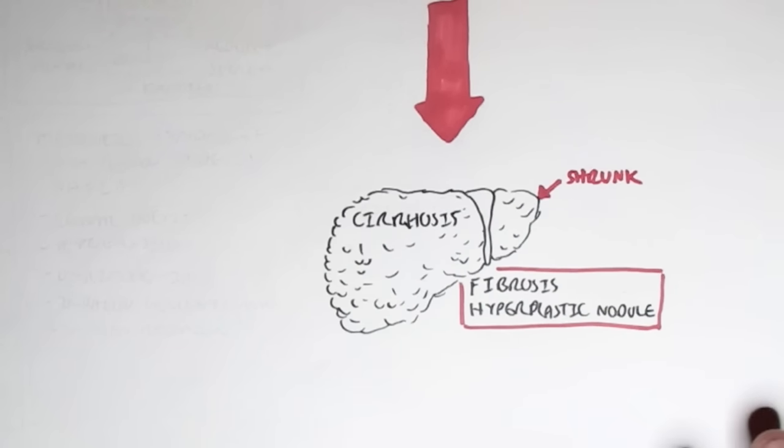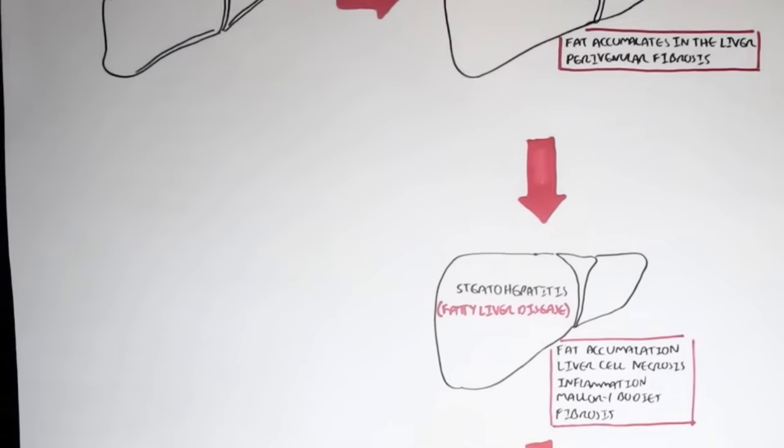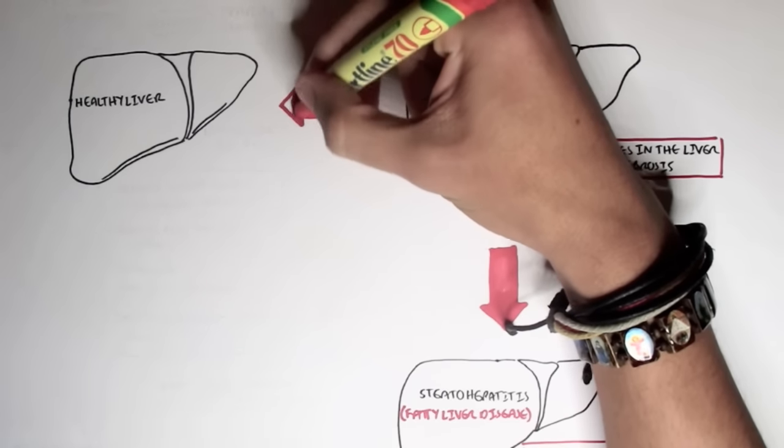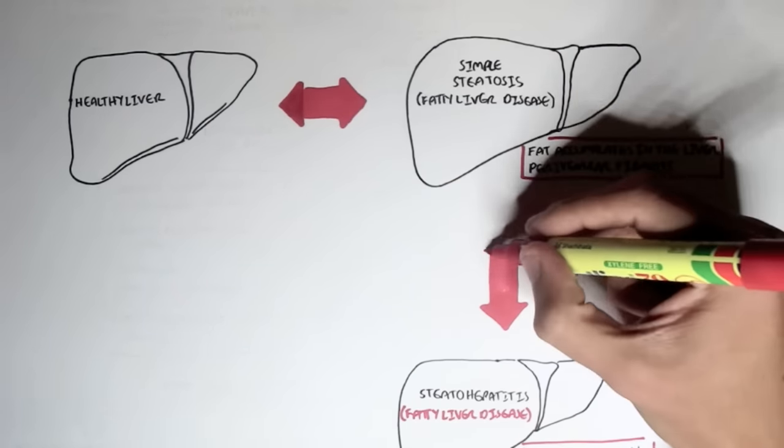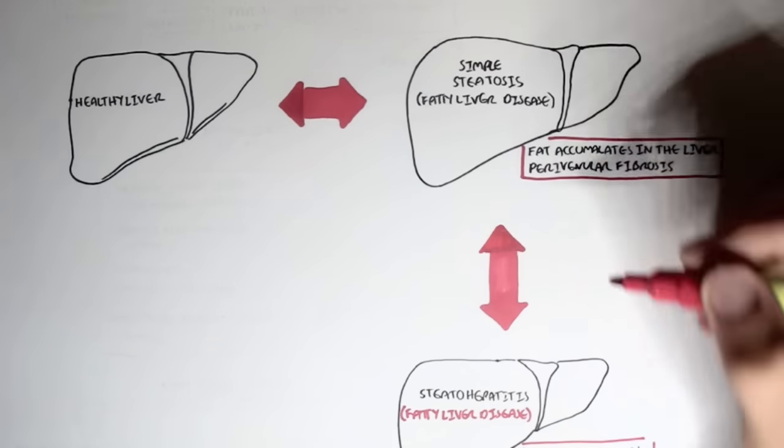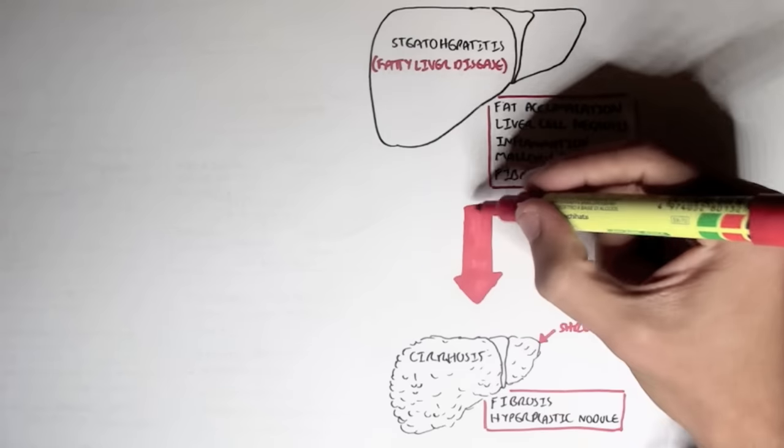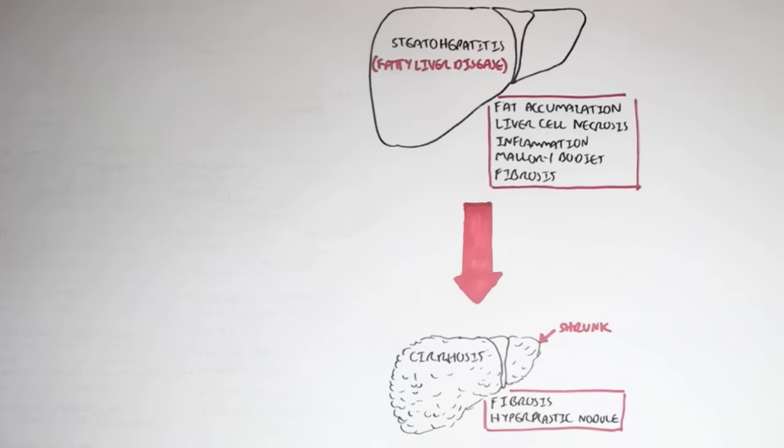It is interesting to note that from a steatosis state, it is reversible to go back to a healthy liver, as well as from a steatohepatitis state. It is reversible and you can go back to a healthy liver if you stop taking in bad substances, the toxic substances such as alcohol. However, once you get to cirrhosis, it is irreversible. And that is why it is important that preventative measures and treatment are taking place to prevent the progression to cirrhosis.